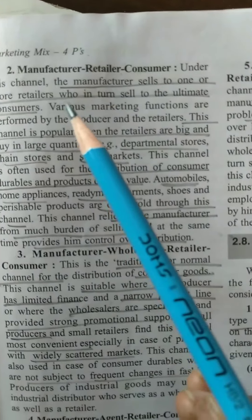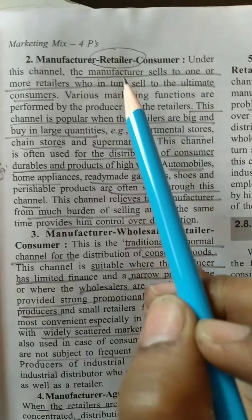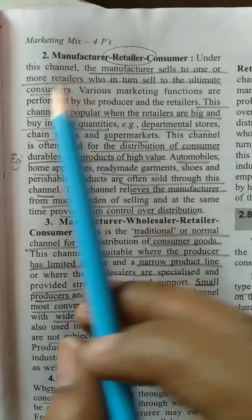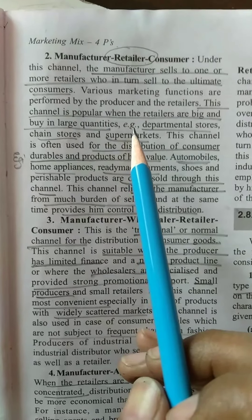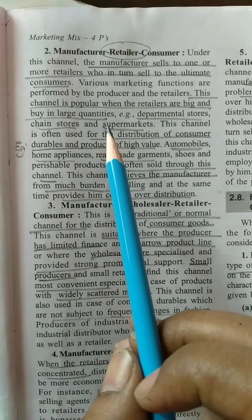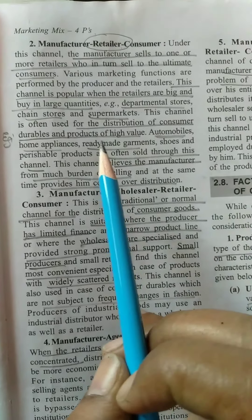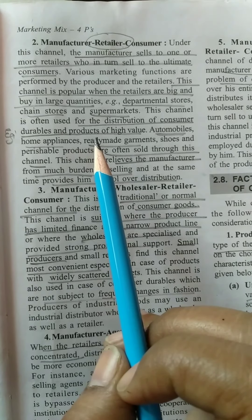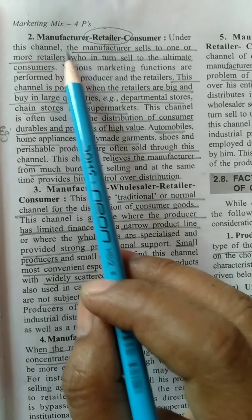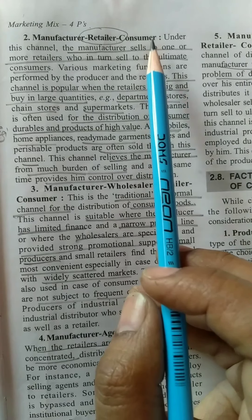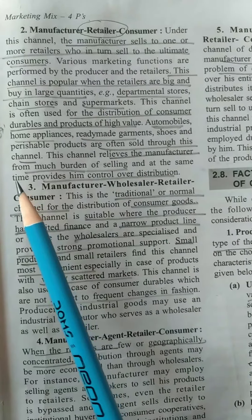The second channel — manufacturer to retailer to consumer — includes one middleman: the retailer. The manufacturer first sells to the retailer, who then sells to the consumer. This channel is popular when retailers are large and buy in large quantities, such as departmental stores and supermarkets. It is often used for consumer durables and high-value products like automobiles and home appliances, where the retailer can provide consumers with necessary product information.